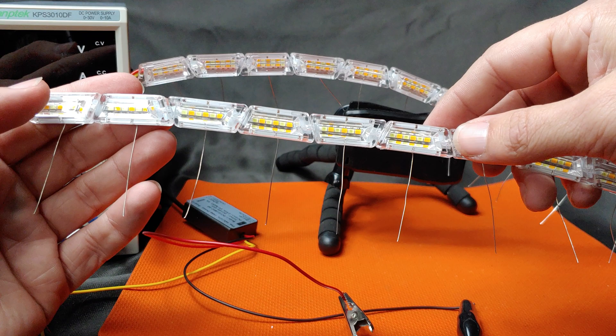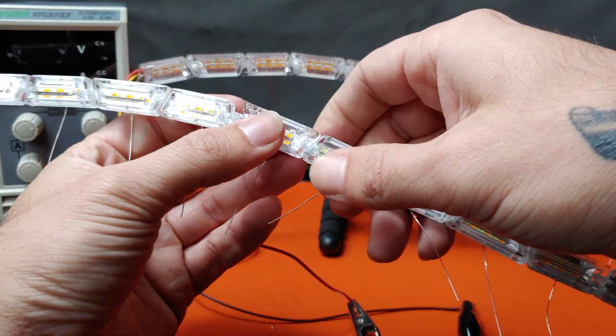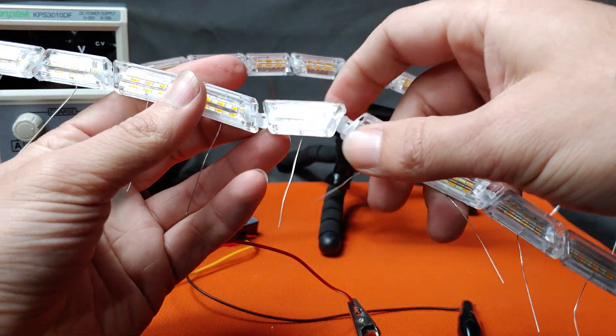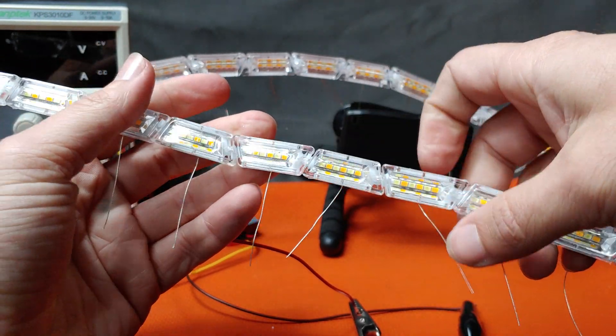Each strip is made up of 16 of these segments. The segments can pop apart to round corners in your housing, or snap together to make a straight line.